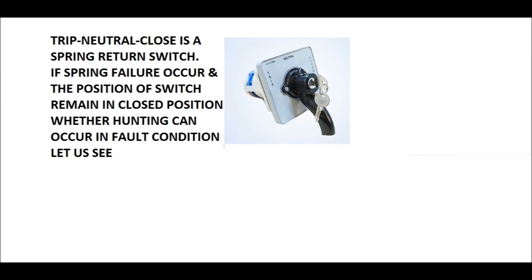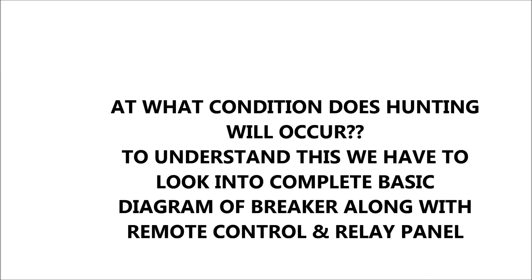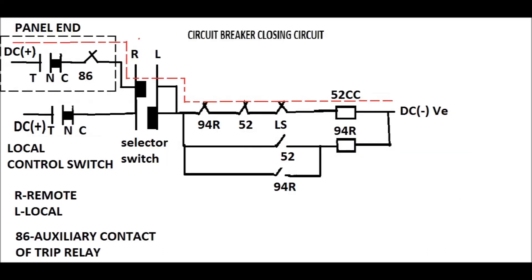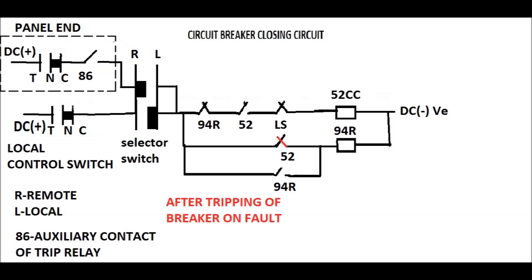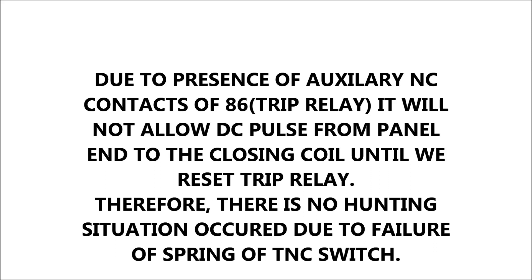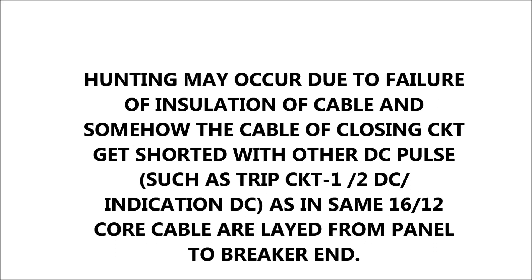At most sites, hunting may be thought to arise due to failure of the spring return of the TNC control switch. As shown in this figure, if we press the control switch to the closed position, it will automatically return to the normal position due to the spring. However, to understand whether spring failure can cause hunting in the absence of an anti-pumping relay, we must go through the complete circuit diagram from the panel end to the breaker end. In this complete diagram, you can see there is an auxiliary NC contact of the master trip relay, or 86 relay. If a fault occurs, the 86 relay will open and will not allow any DC pulse to the closing coil — so spring failure of the control switch has no relation to hunting.